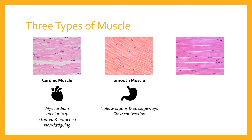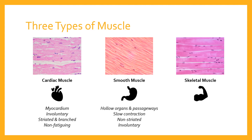Smooth muscle is non-striated — it doesn't have the stripes that cardiac muscle has, and certainly not like skeletal muscle. Similar to cardiac muscle, smooth muscle is also under involuntary control, regulated independently by the nervous system — you don't have to think about the passage of food through your digestive system. So the key features of smooth muscle are: involuntary, relatively slow contraction, individualized functions depending on location, and non-striated.